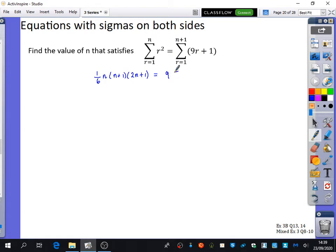The next bit is 9 from r equals 1 to n plus 1 of r, plus 1 from r equals 1 to n plus 1. Just doing that extra bit of breaking it down. So I have a sixth n, n plus 1, 2n plus 1 is equal to, what's this bit going to be? 9 over 2, 9 over 2, n, n plus 1, n plus 1. And what's this bit? n plus 1. Plus n plus 1. And you'll see why I'm putting it in brackets in a second.